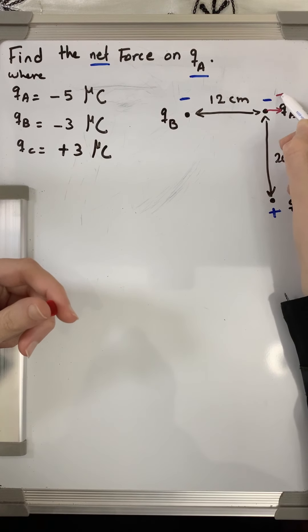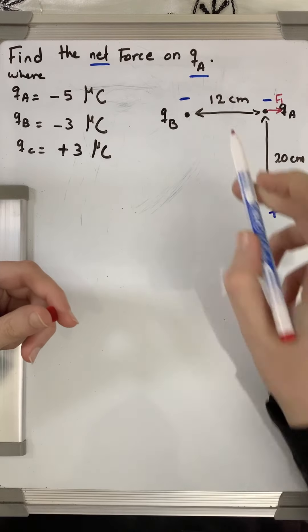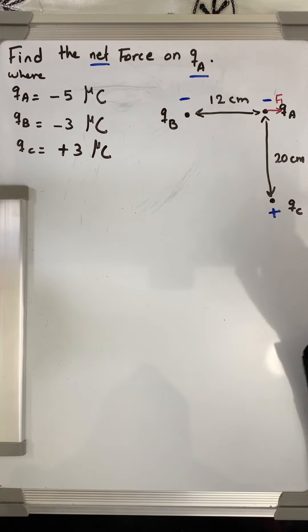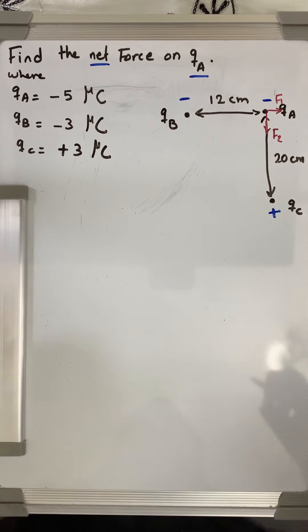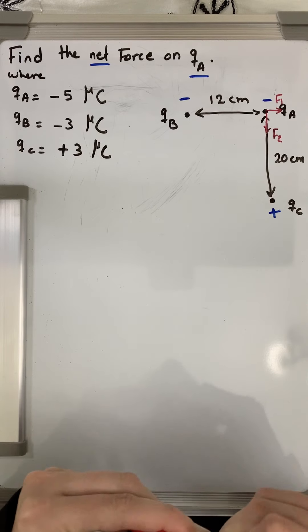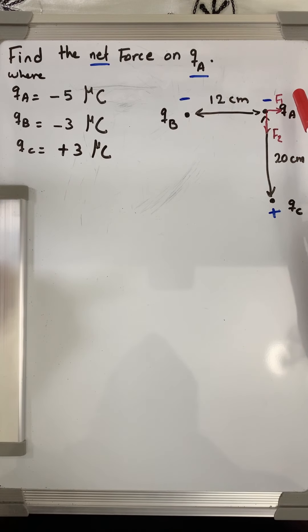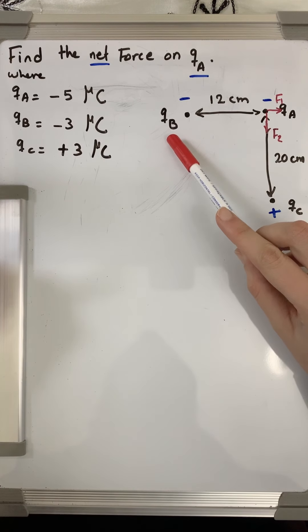qa because like charges repel each other. The force will be repulsive between them. While qa and qc are of different nature, so qc will attract qa. So there are two forces affecting qa: F1 which is due to qb...